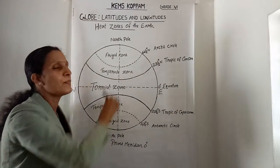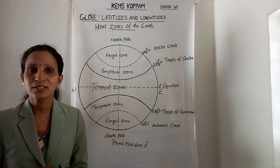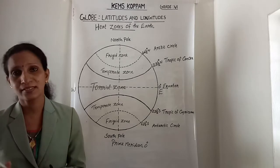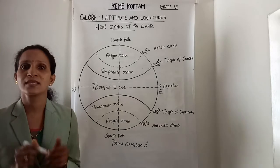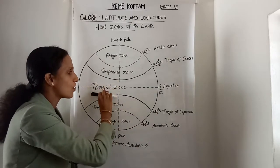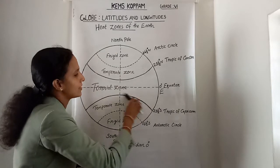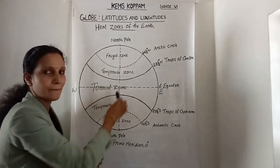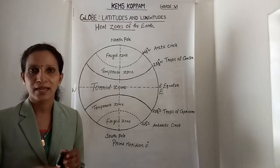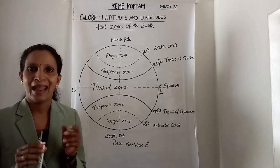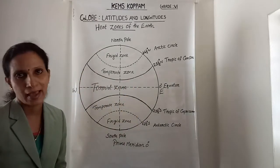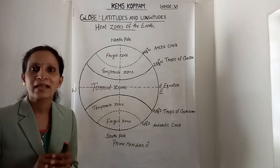These are the important parallels of latitudes. Next we study the heat zones of the earth. The midday sun is exactly overhead at least once a year on all latitudes in between the Tropic of Cancer and the Tropic of Capricorn. This area therefore receives the maximum heat and is called the Torrid Zone.